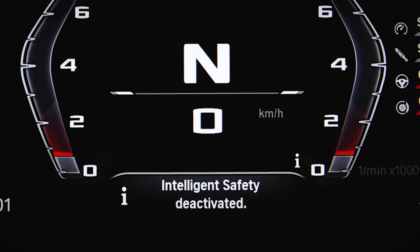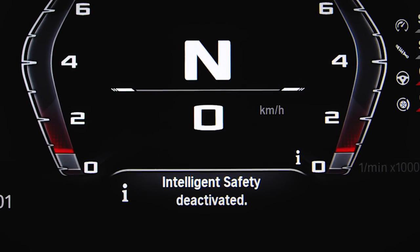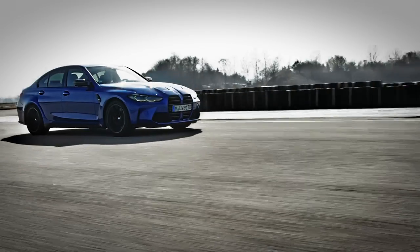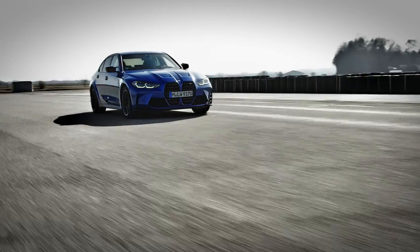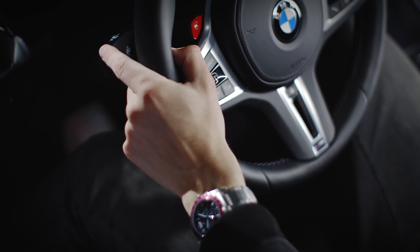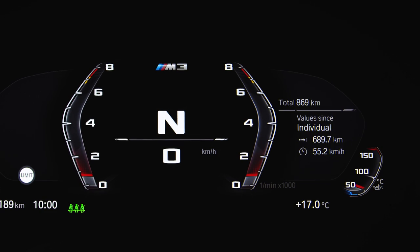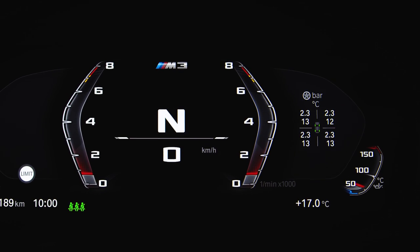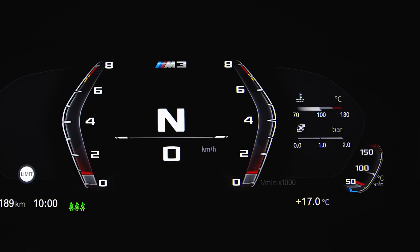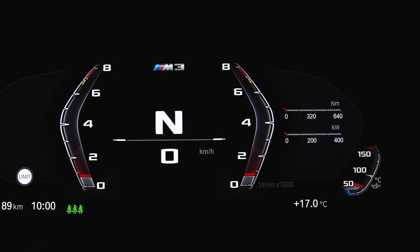Please remember that track mode disables driver assistance systems and should only be used on the track. By pressing the BC button on the indicator stalk, the same widgets are available on the right.